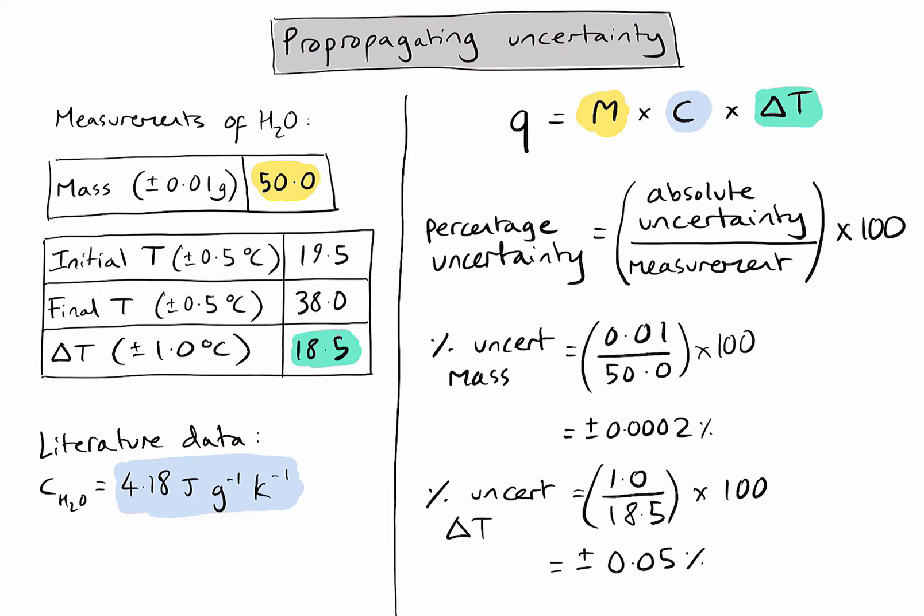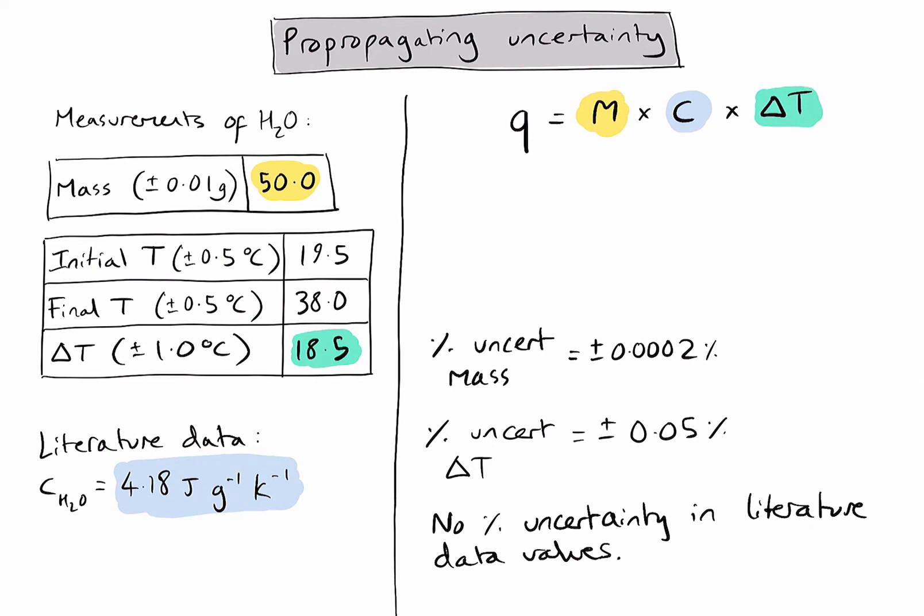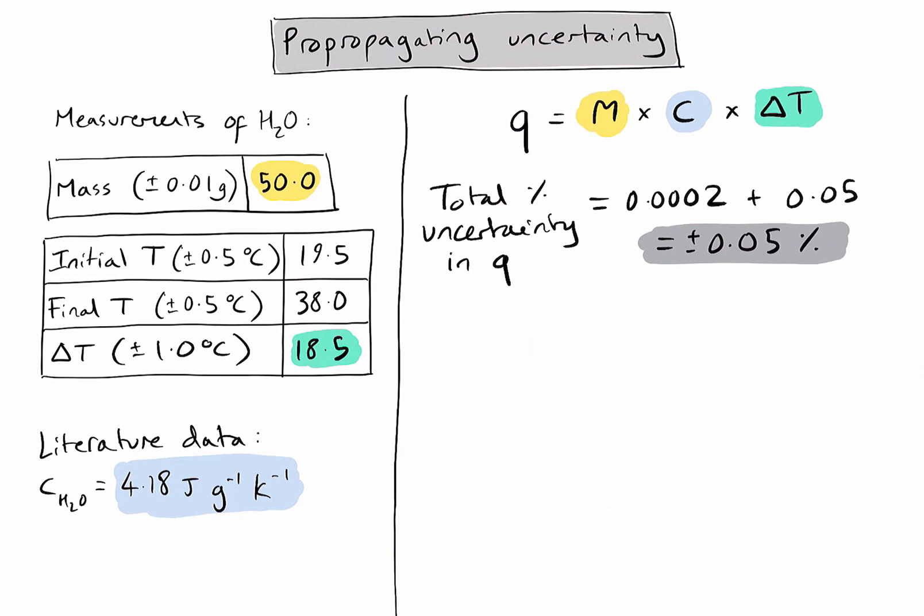Now, given the literature data of the specific heat capacity is from literature, so has no uncertainty, these are the only two percentage uncertainties I need to worry about. So now I've calculated the percentage uncertainties of each of my values. All I need to do is add them together to give me a total percentage uncertainty for the value we calculated for Q. And if I add these two values together and take into account the decimal places, my final percentage uncertainty in the value of Q is 0.05 percent, or plus or minus 0.05 percent. So to present my final value, Q, we said was 3,870 joules plus or minus 0.05 percent.